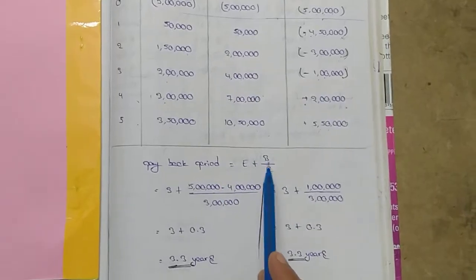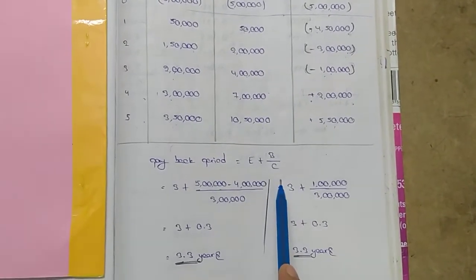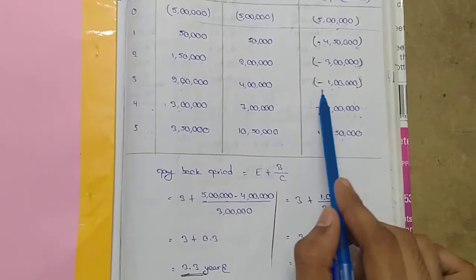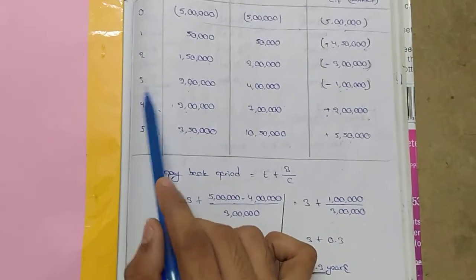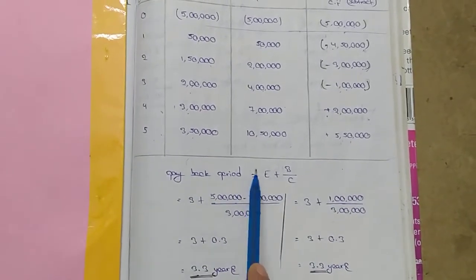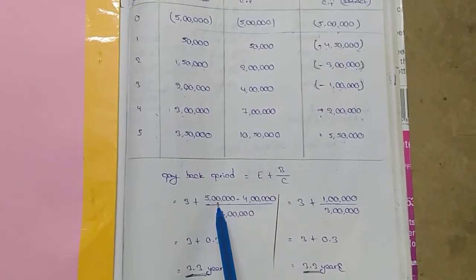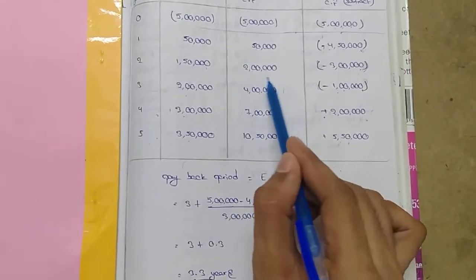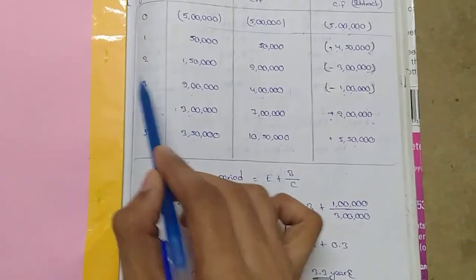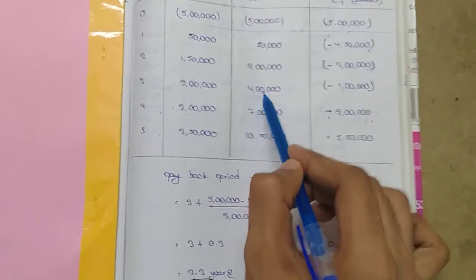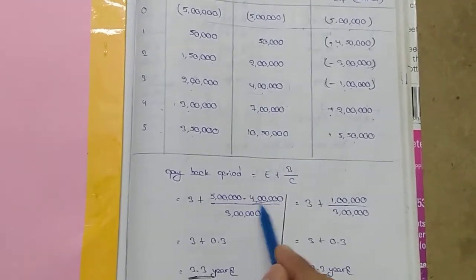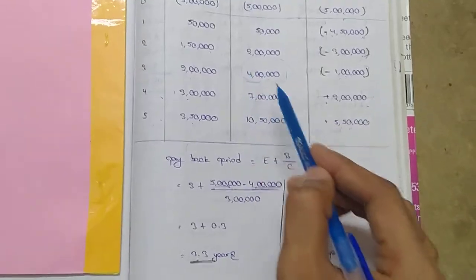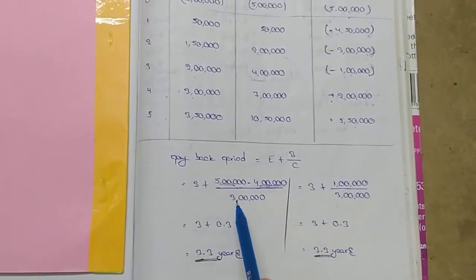The payback period formula for the uneven method is: E plus B divided by CF of next year. Here E is the last year where the cumulative balance is negative, which is the third year. B is the remaining balance at that year: five lakhs minus four lakhs equals one lakh. The next year's cash inflow is three lakhs.